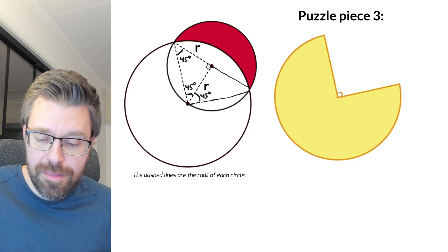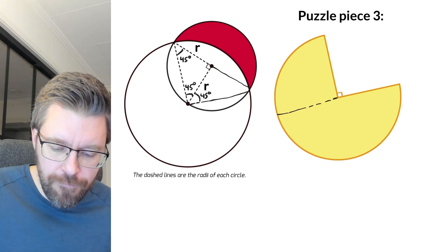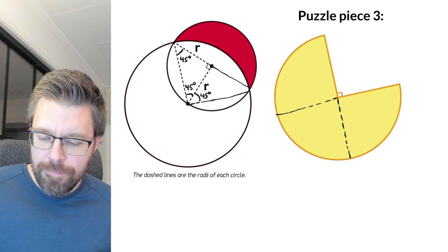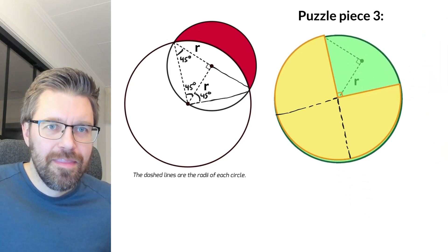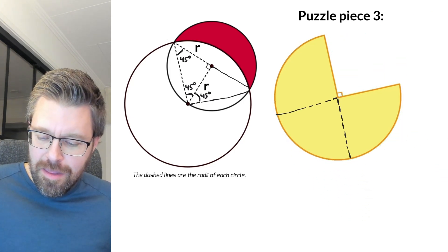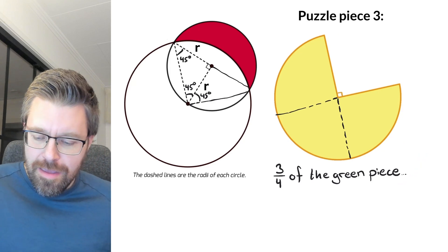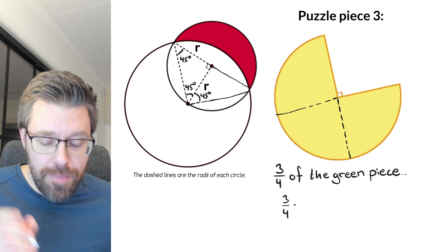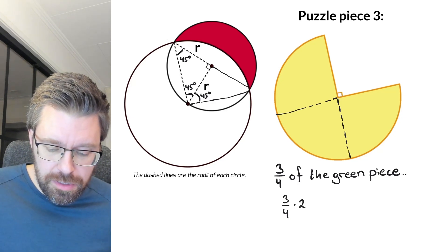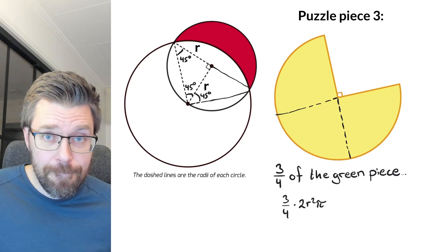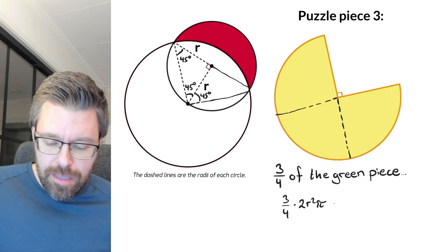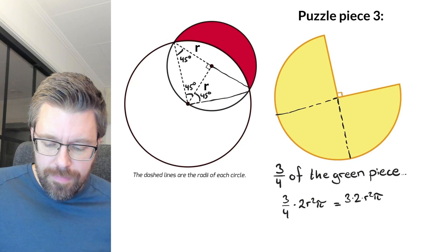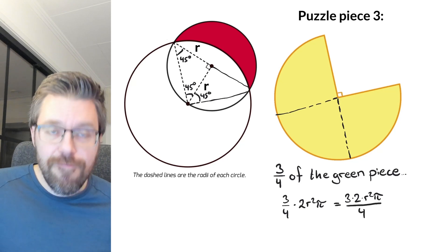The yellow piece is three quarters of the green piece in area. So the green piece was this one right here. And three quarters of the green piece, it means three quarters times the area for the green piece. And it was two times r squared pi.